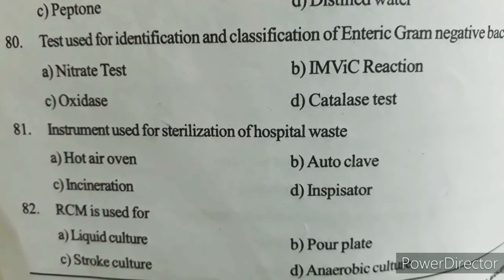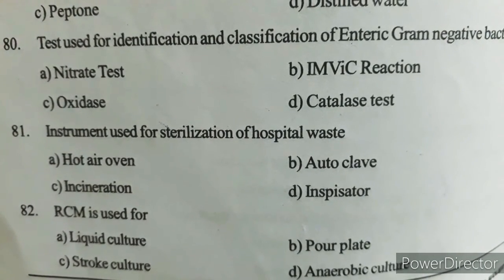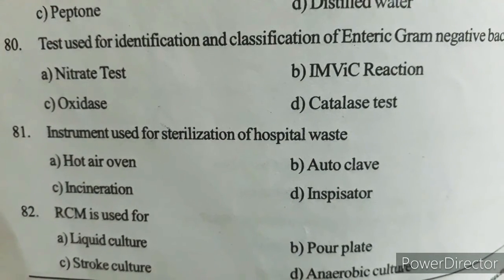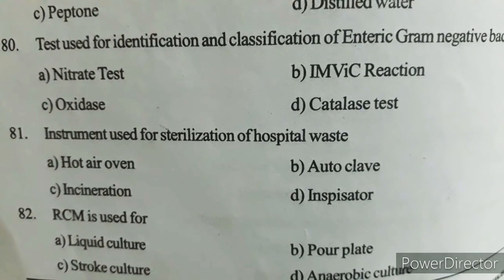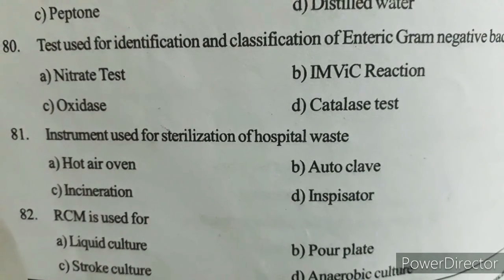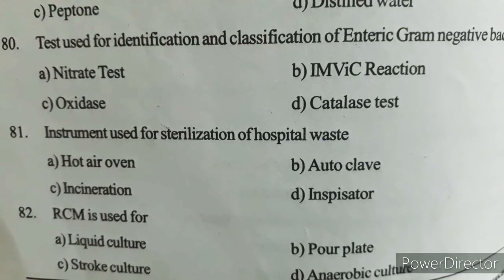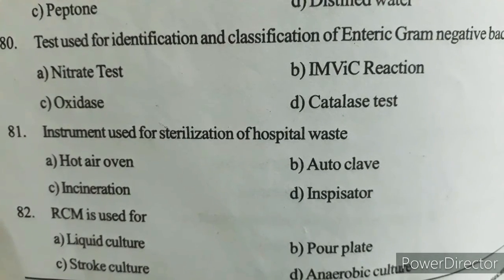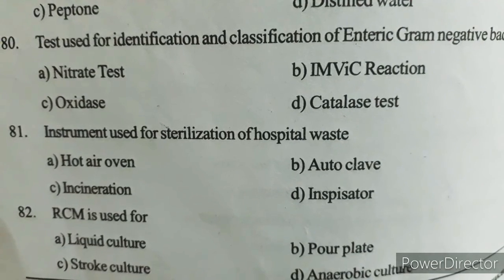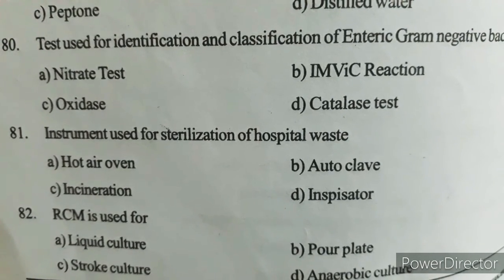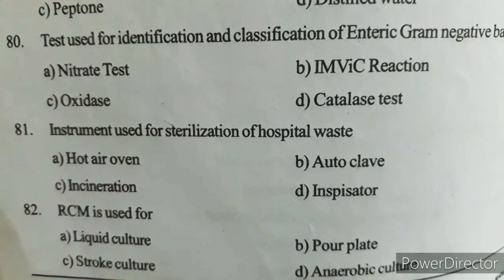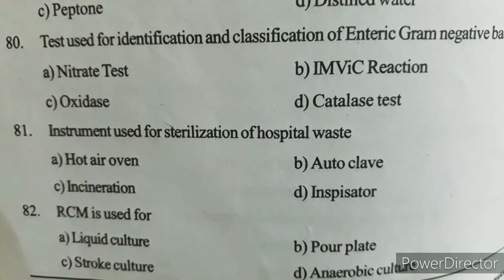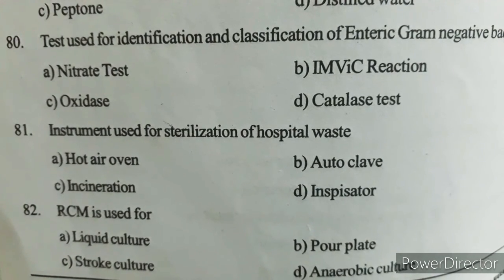Next question: RCM — Robertson's Cooked Meat medium — is used for? Option A) Liquid culture, Option B) Pour plate, Option C) Stroke culture, Option D) Anaerobic culture. Correct answer: Option D — Anaerobic culture.